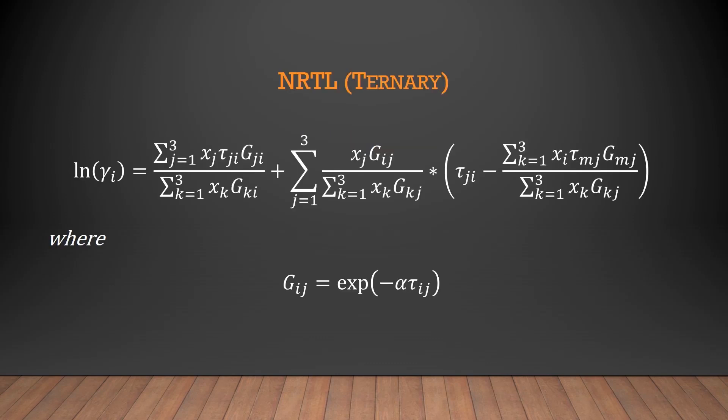After all three binary systems have been modeled, this ternary NRTL equation can be used to model a ternary system of all three compounds. This equation utilizes the binary interaction parameters from the binary NRTL equations to relate them into a single activity coefficient for each component.